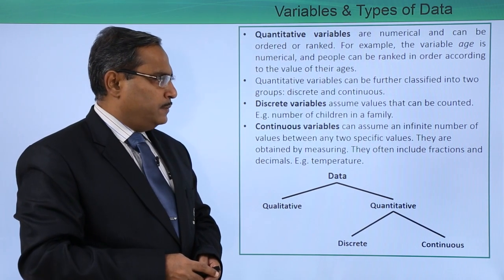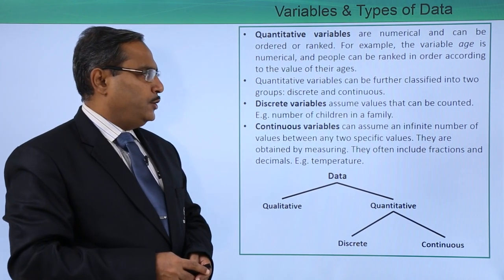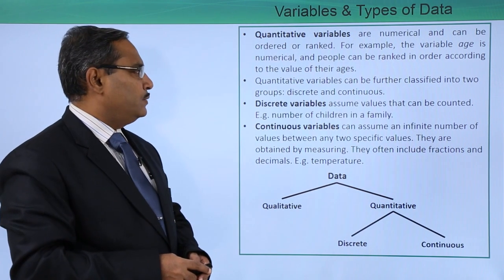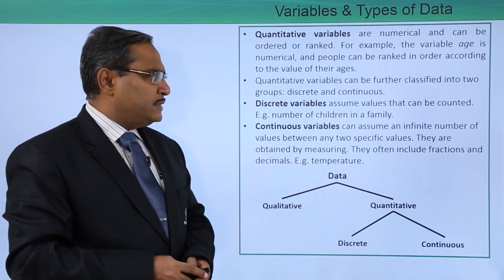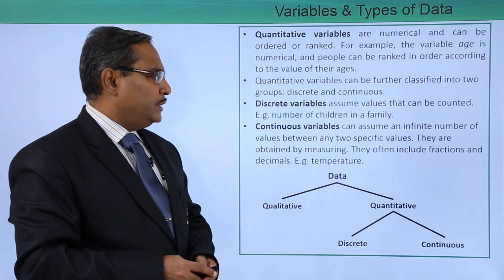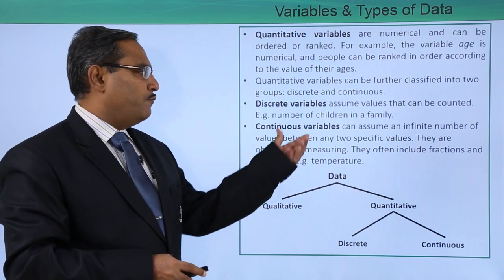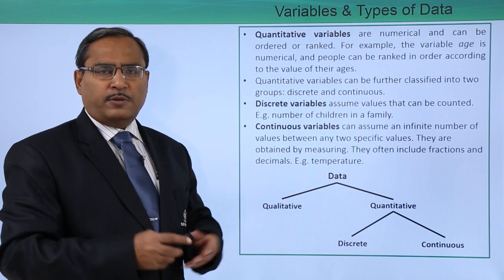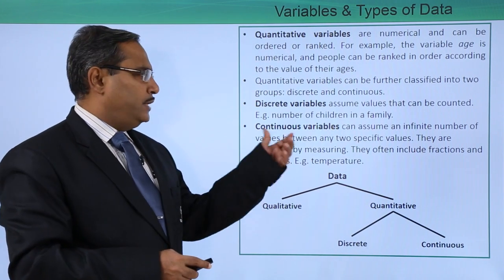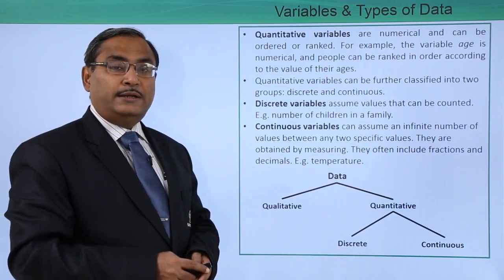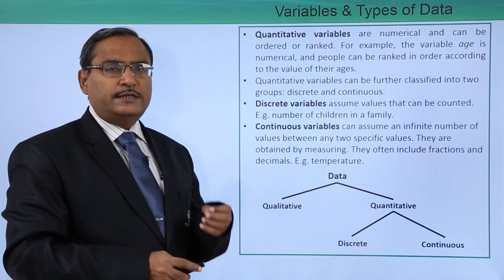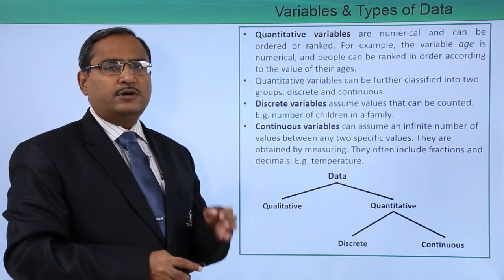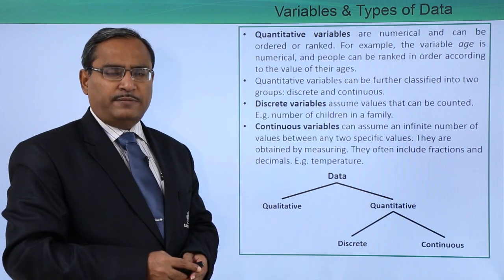Quantitative variables can further be classified into two groups: discrete and continuous. Discrete variables assume values that can be counted. For example, the number of children or members in a family — they can be counted but cannot be continuous. They are discrete; the figure will be 4 or 5 or 6, it cannot be 4.5.